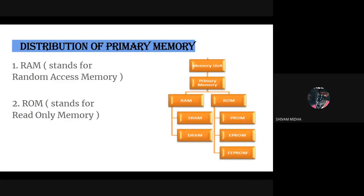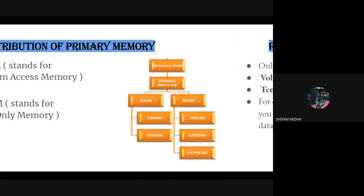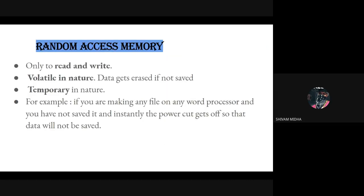Primary memory is divided into two parts: first RAM and second ROM. RAM stands for Random Access Memory and ROM stands for Read Only Memory. RAM is used to read and write and it is volatile in nature, therefore data gets erased if not saved - it is temporary in nature. For example, if you are working on a file in a word processor and haven't saved it, and the power goes off, that data will not be saved.